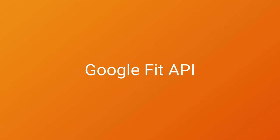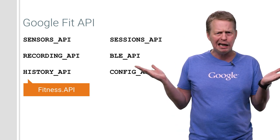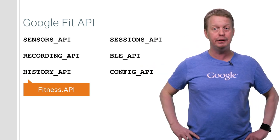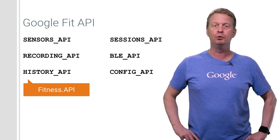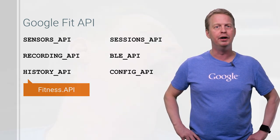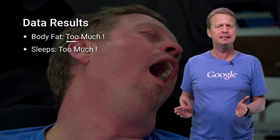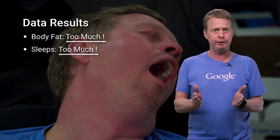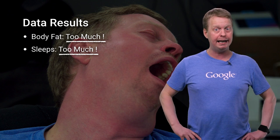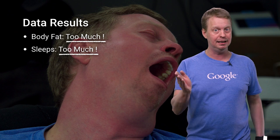Now turning to Google Fit. In this release, we split the single fitness API constant into six different API constants. Why? Because this significantly reduces the memory footprint for Google Fit apps, in particular for apps that are running in the background. And there is just no limit to the types of fitness data that you want to measure and record. So therefore, we've added two more data types, namely body fat and sleep.